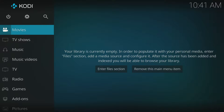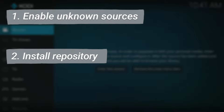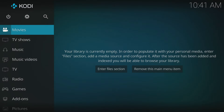When you install a Kodi build, there are three main steps. First, you need to enable the option of allowing unknown sources. Second, you need to install a repository that contains the build. And finally, you can install the build from the repository. Don't worry, it's not as complicated as it sounds — in fact, it's a breeze and the whole process should only take a few minutes.